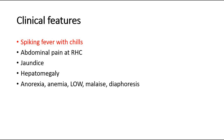Jaundice and hepatomegaly are often seen as well. Other non-specific symptoms include anorexia, signs and symptoms of anaemia such as palpitations or fatigue, loss of weight, pain radiating to the shoulder, and diaphoresis where there is excessive sweating.